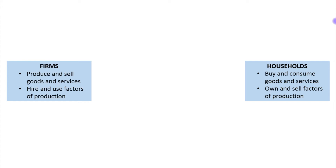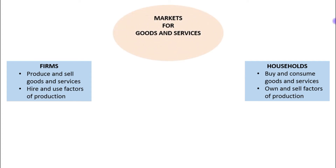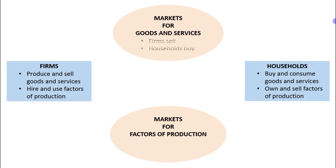Households and firms interact in two types of markets. The first one is markets for goods and services, and the other one is markets for the factors of production. In the markets for goods and services, households are buyers and firms are sellers.